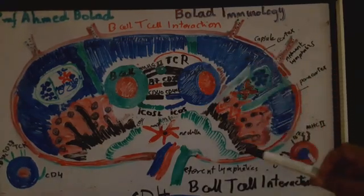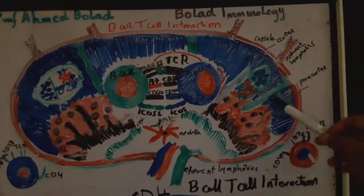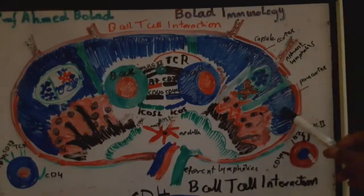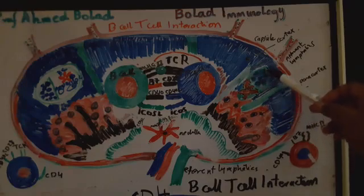For example, this is a lymph node. This is the cortex, as shown in blue. And these are the B-cell follicles.